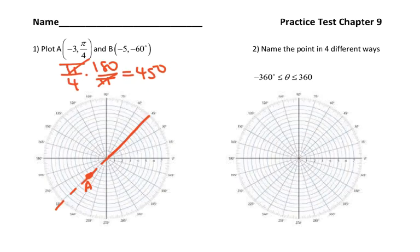Point B, which is at negative 60 degrees, negative 5. So first, negative 60 degrees is this way. It's going to be here. This is where negative 60 degrees is. But since the radius is negative, you're going to go off in the other direction and graph the dot on the fifth circle out.